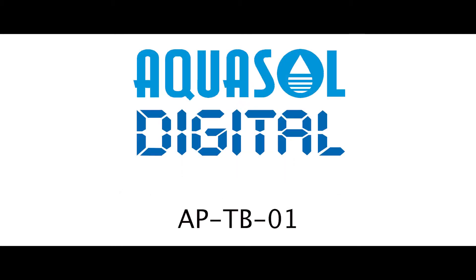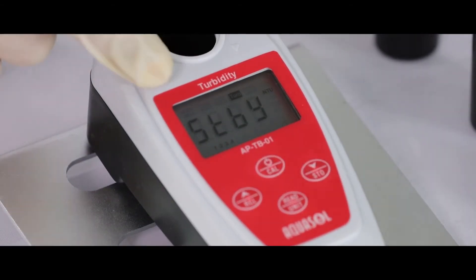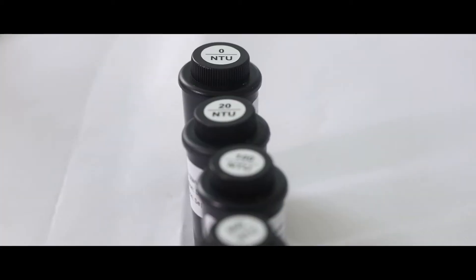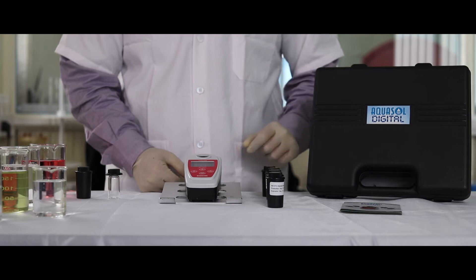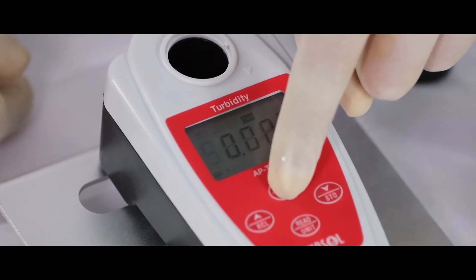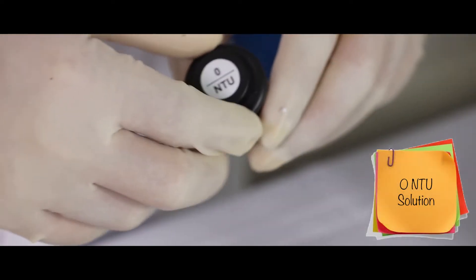APTB01 is a portable meter to check turbidity. Press the power button to switch on the meter. Four NTU solutions - 0, 20, 100, and 800 - are given for calibration. To start calibration, press the CAL key for three seconds. Now place...